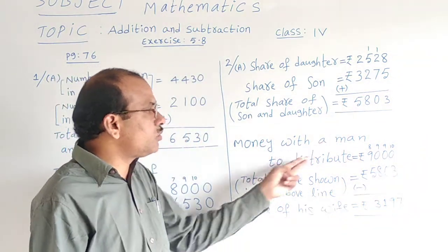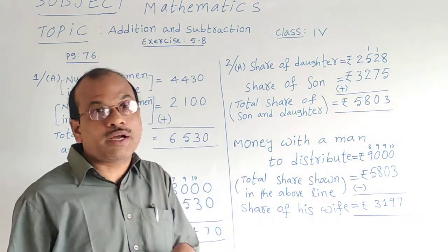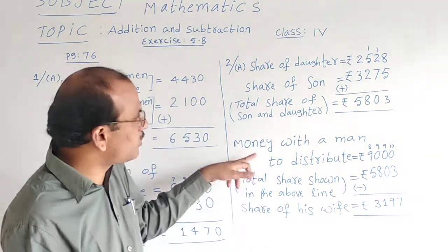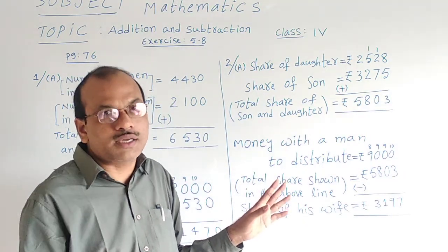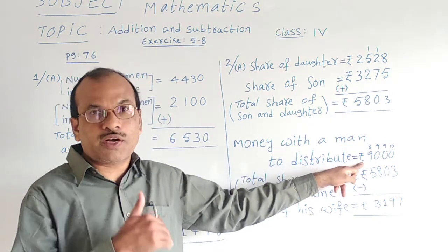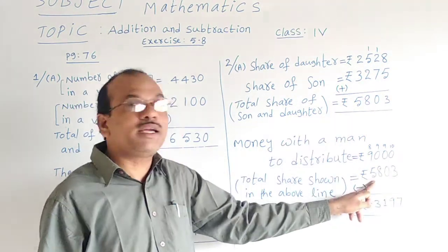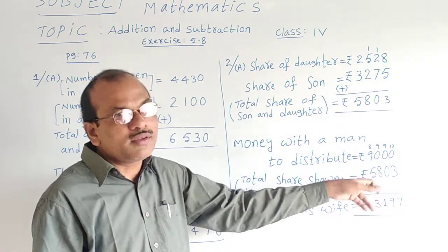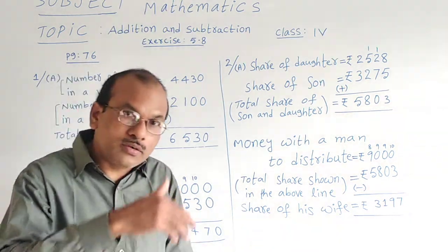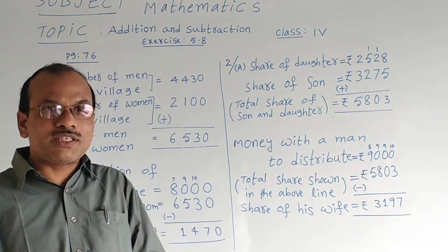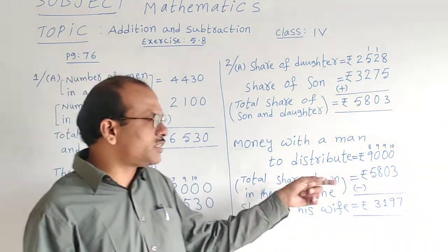Money with the man to distribute: total how much money does the man have? He has 9,000 rupees in his pocket. In that, how much was given for daughter and son together? That is 5,803 rupees already distributed. The remaining money in his pocket is given fully to his wife. So how much money was given to his wife? That is found by subtraction.